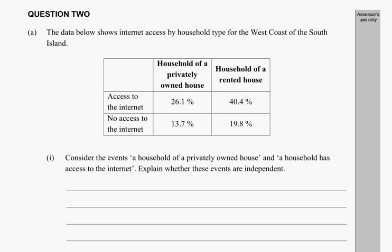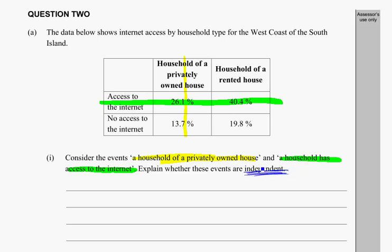They want us to consider the events: a household is a privately owned house — that's one group — and a household has access to the internet — that's the other group. You have to memorize the independence formula: the probability of A and B happening equals the probability of A times the probability of B, but only if they are independent.